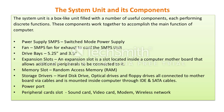An expansion slot is located inside the computer motherboard and allows additional peripherals to be connected. Expansion slot types include PCI, ISA, and AGP. Memory slots hold RAM. Storage drives — hard disk drives, optical drives, and floppy drives — are connected to the motherboard via IDE and SATA cables. Power ports and peripheral card slots support sound cards, video cards, modems, and wireless network cards.